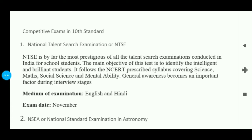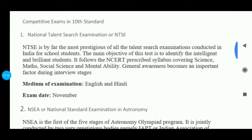There are two stages of this exam. The first stage is conducted by your state board. If you clear that, then you go to the second stage, which is harder than stage 1. The exam covers science, math, social science, and mental ability. One paper will be mental ability, and the second paper will be SAT, which includes science — physics, chemistry, biology — and social science — geography, economics, and civics.